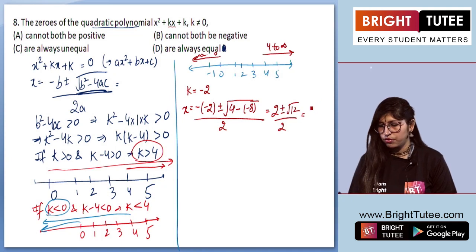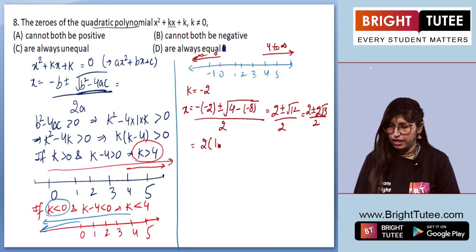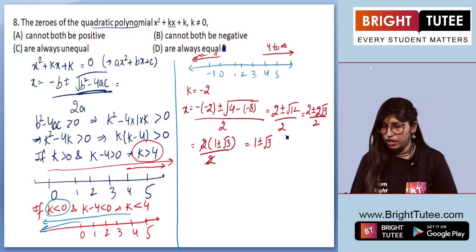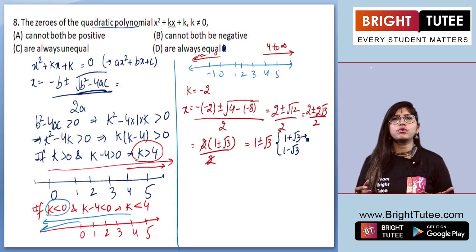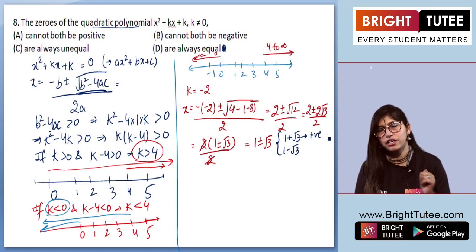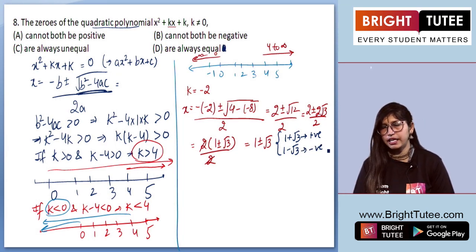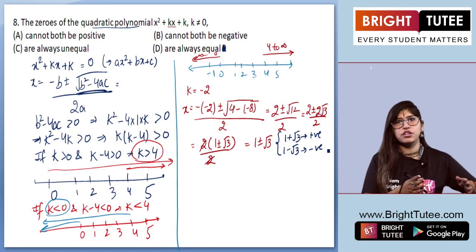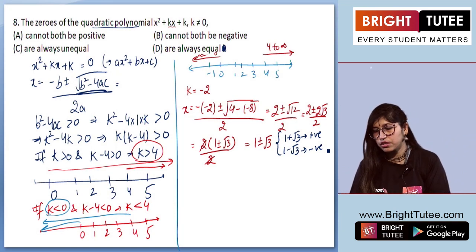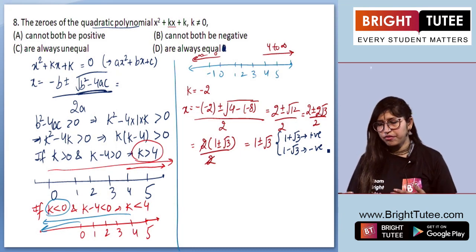Simplifying: √12 = 2√3, so x = (2 ± 2√3) / 2 = 1 ± √3. The two roots are 1 + √3 and 1 − √3. Since √3 ≈ 1.7, the first root is positive (≈ 2.7) and the second is negative (≈ −0.7). So for any k < 0, one root is positive and one is negative.